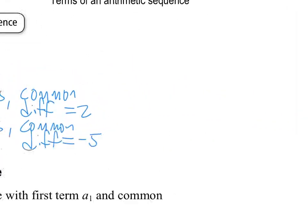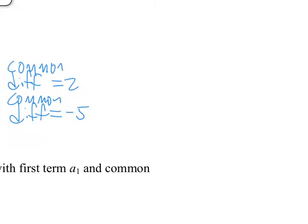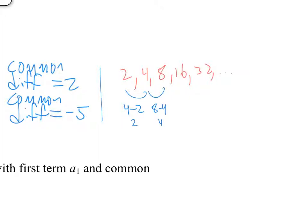Let's try one more pattern: 2, 4, 8, 16, 32. Looks like a nice pattern, but is it arithmetic? Well, 4 minus 2 is 2. 8 minus 4 is 4. 16 minus 8 is 8. No — we're not going up by the same thing every time. We're going up 2, then 4, then 8, then 16. So it's not arithmetic — it doesn't have a common difference.